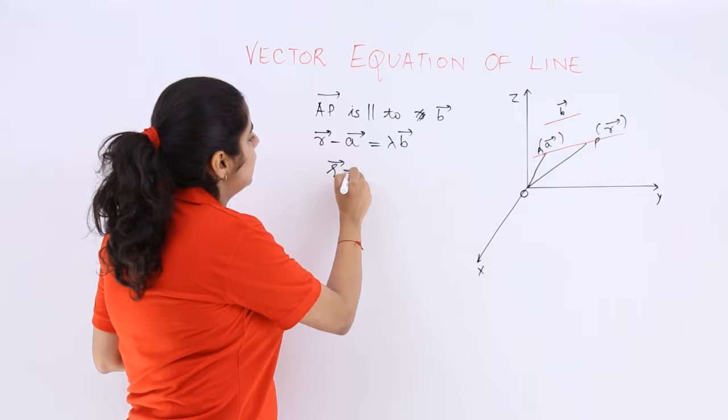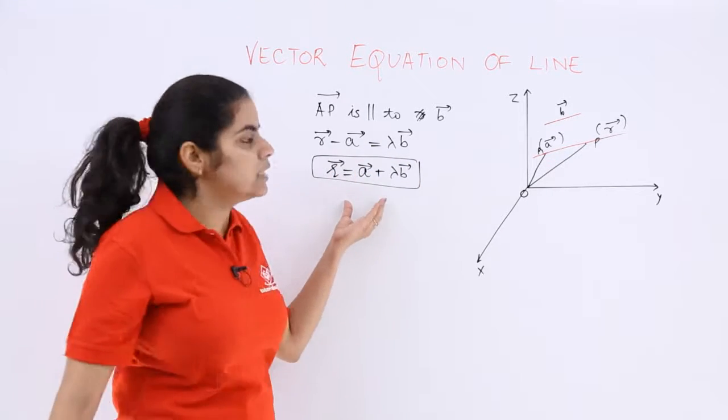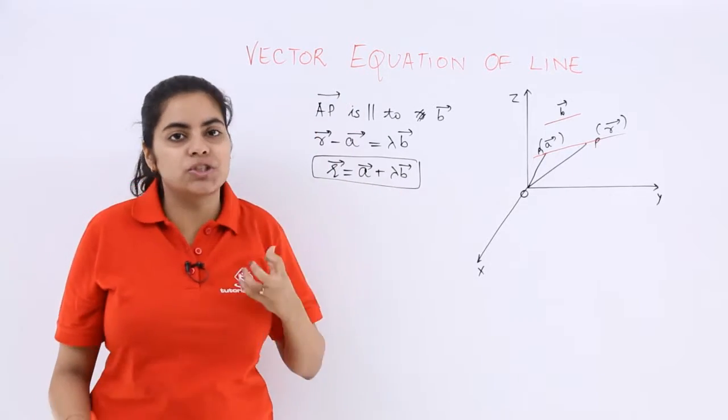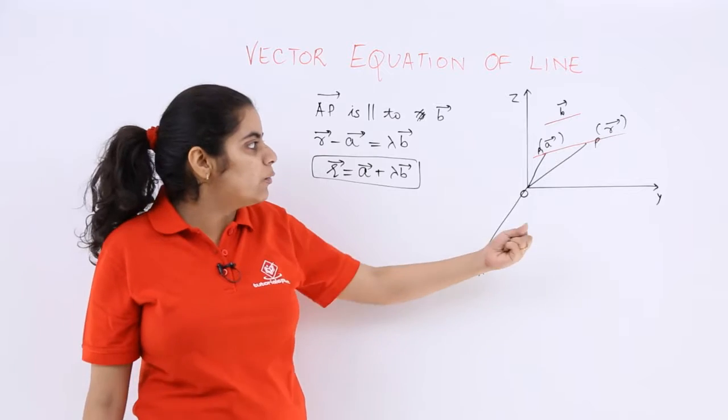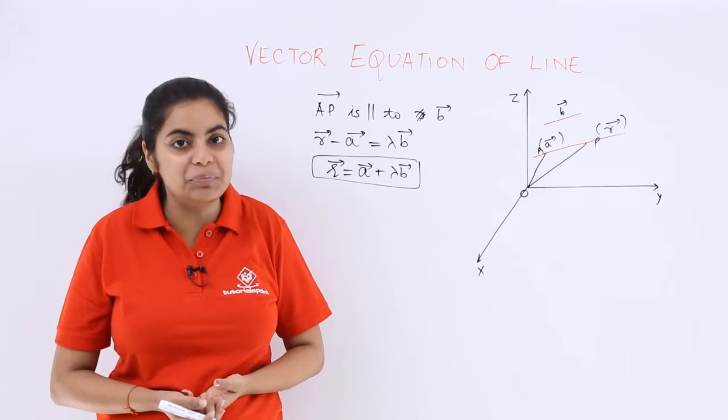Now it can also be written as r is equal to a plus lambda b, transposing it to the other side. So see, this is the equation wherein we say a vector equation of a line such that you have been given a fixed point here and you also have been given that it is parallel to some other vector b.